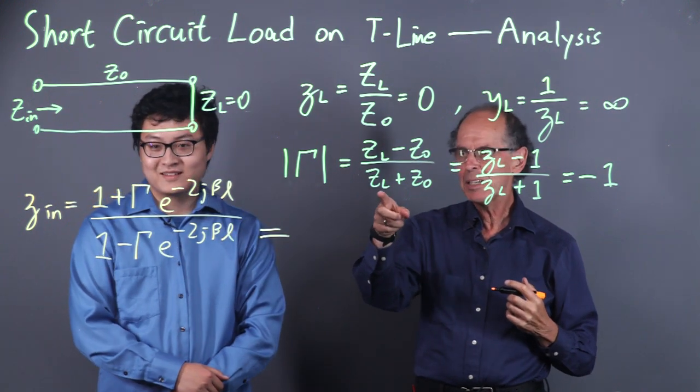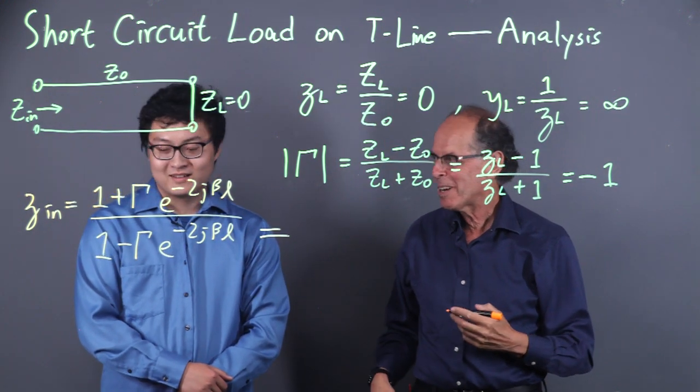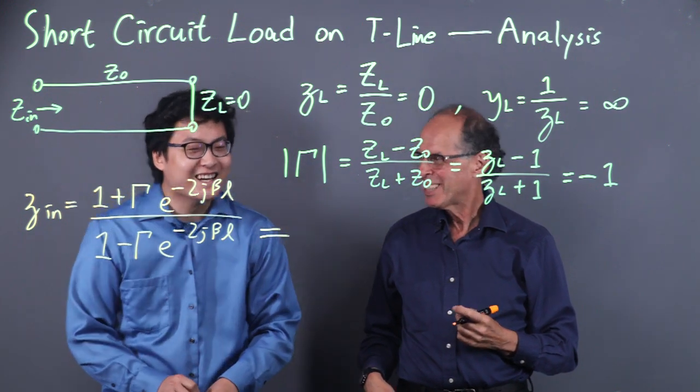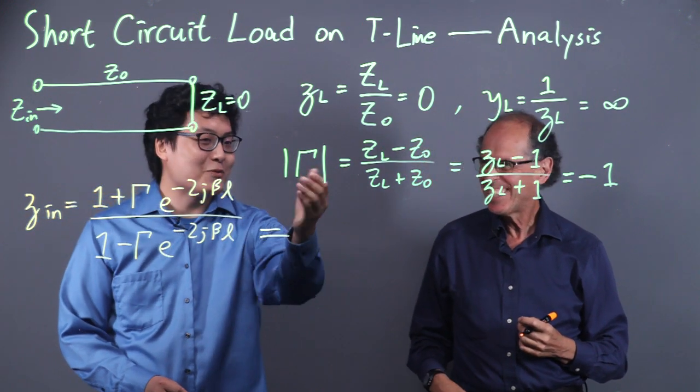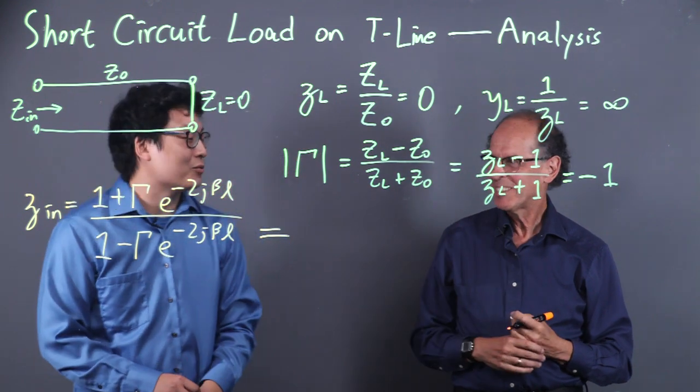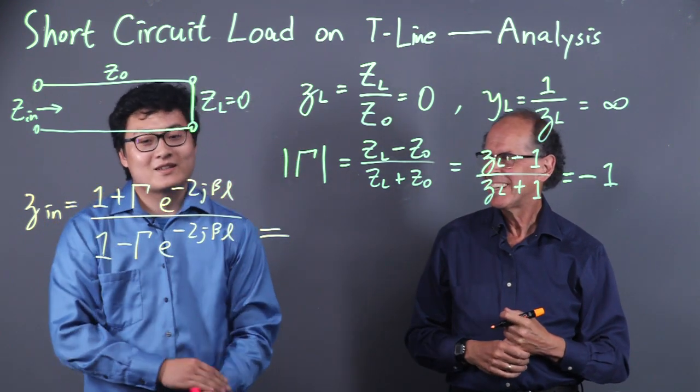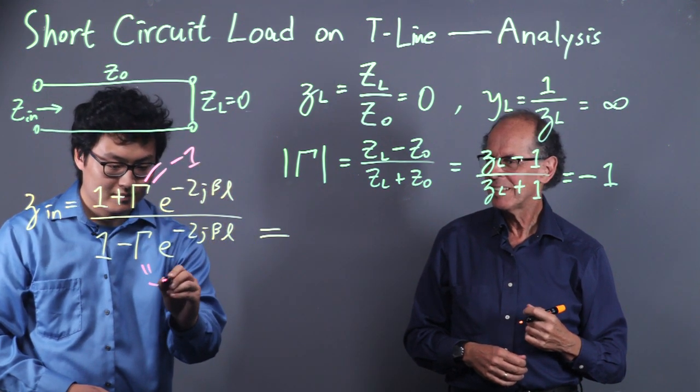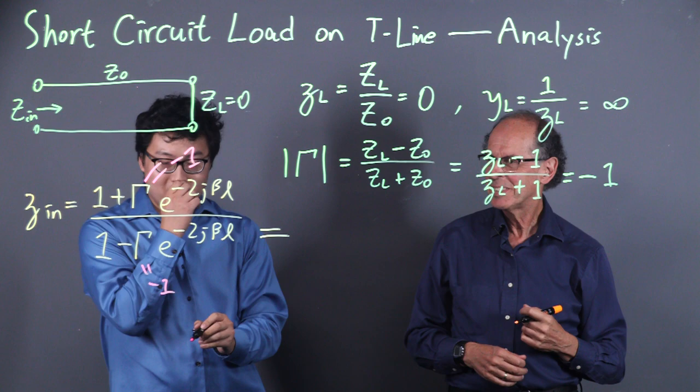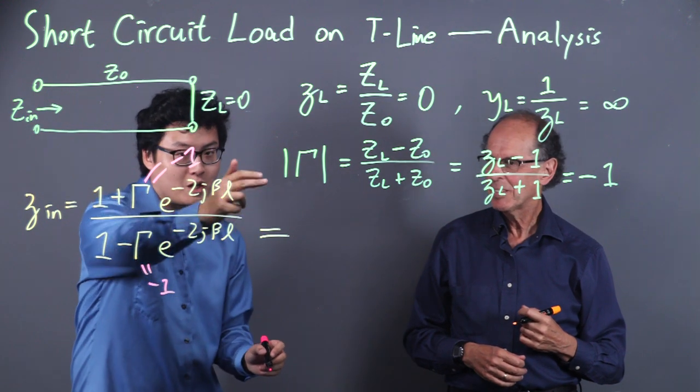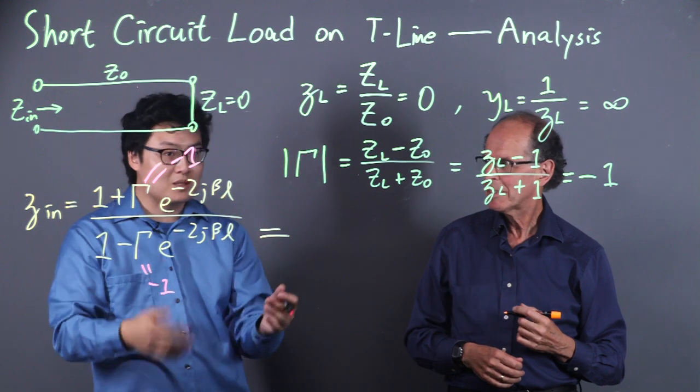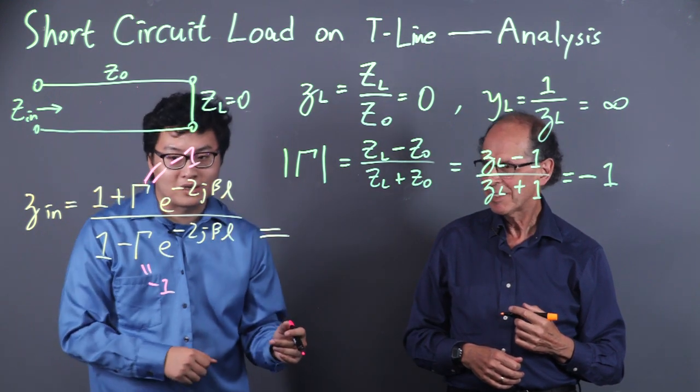Start with gamma, all those exponentials drive me nuts. Gamma is negative one for a short circuit load, so we can simplify those to negative one. We can multiply top and bottom with e to the j beta L to get a more symmetric expression. It will be more clear when I write it out.